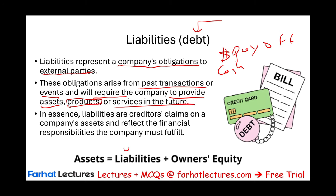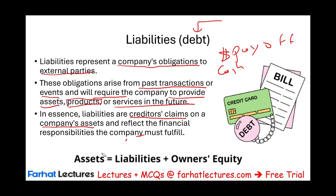Liabilities are, simply put, creditors' claims on the company's assets. If the companies that you owe money to are not paid, they can take your assets — they have a claim on your assets. You have a responsibility to take your assets and pay off your debt. Otherwise, the creditors have a claim on your assets because you owe them money.